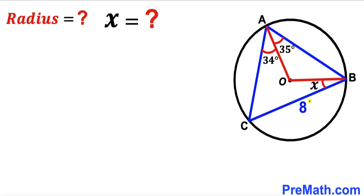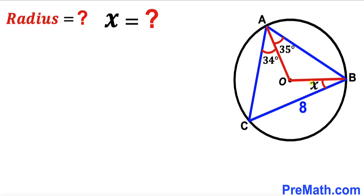Welcome to PreMath. In this video we have a blue triangle ABC fully inscribed in a circle with center O, such that the side length of the blue triangle is 8 units. AO is the radius of the circle and BO is the radius of the same circle. Angle OAB is 34 degrees, angle OBA is 35 degrees, and angle OBC is represented by x. Our task is to calculate the radius of this circle and angle x.